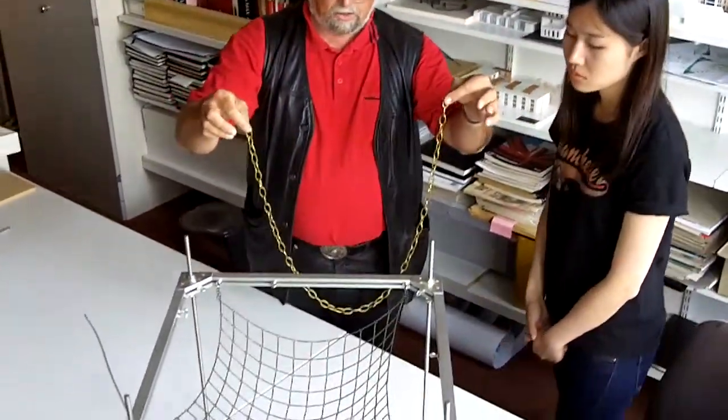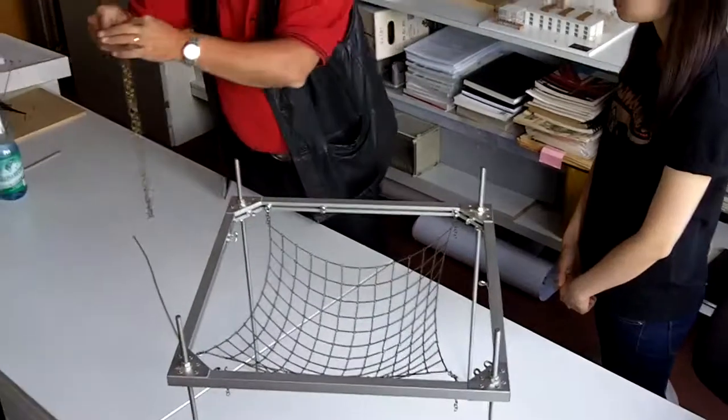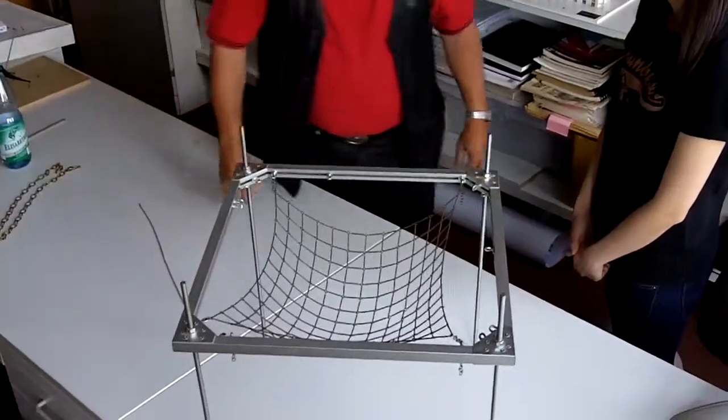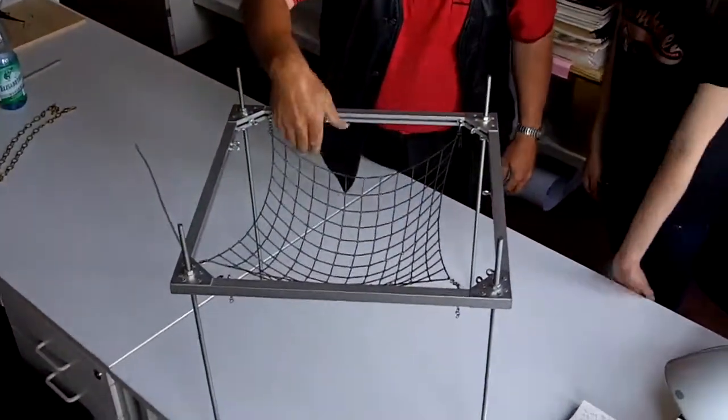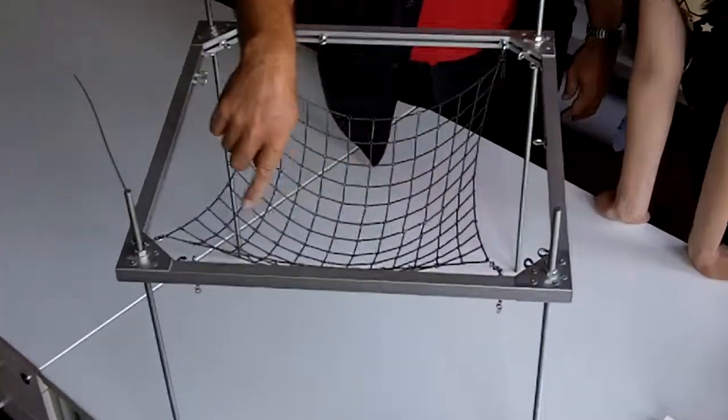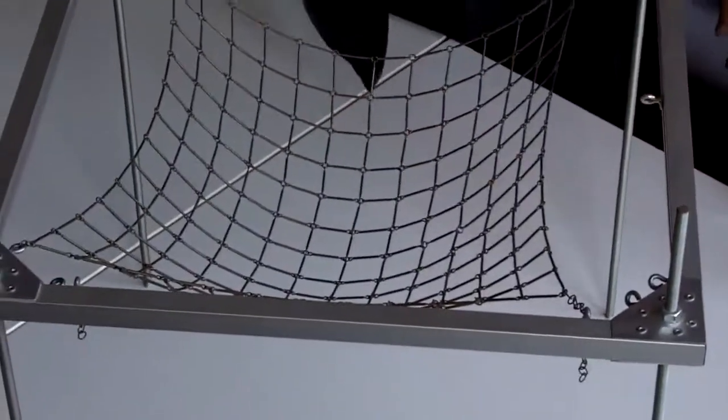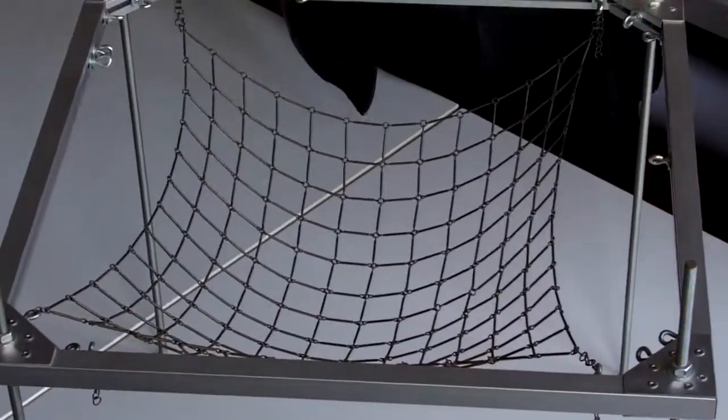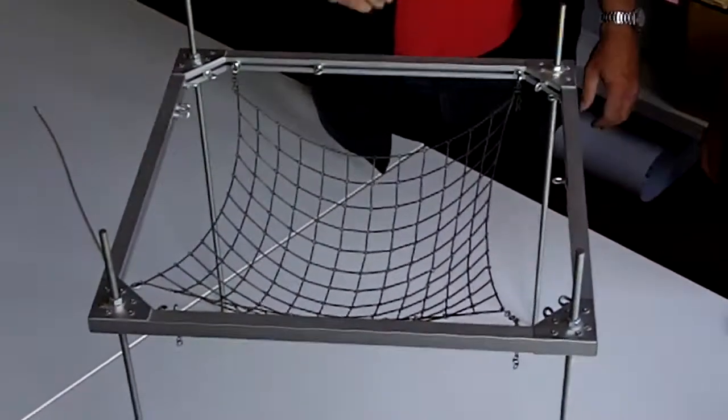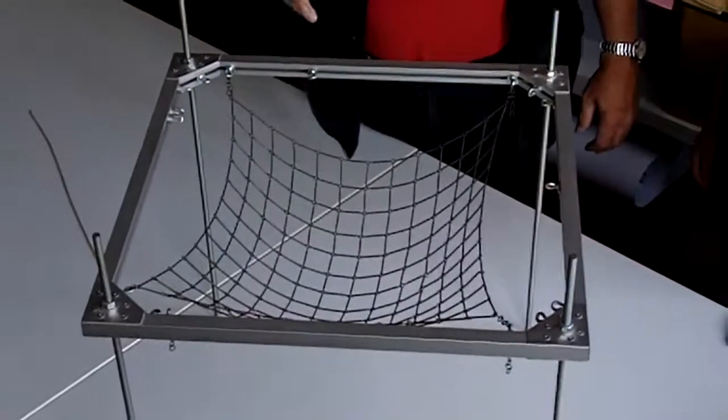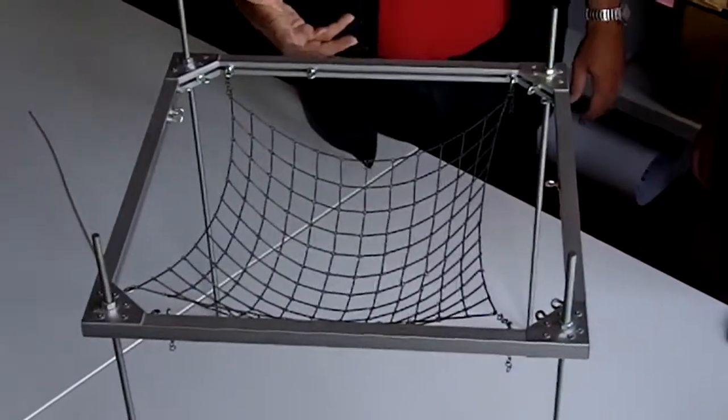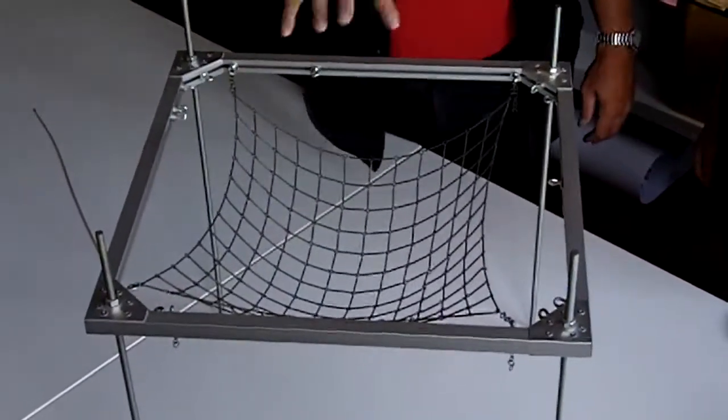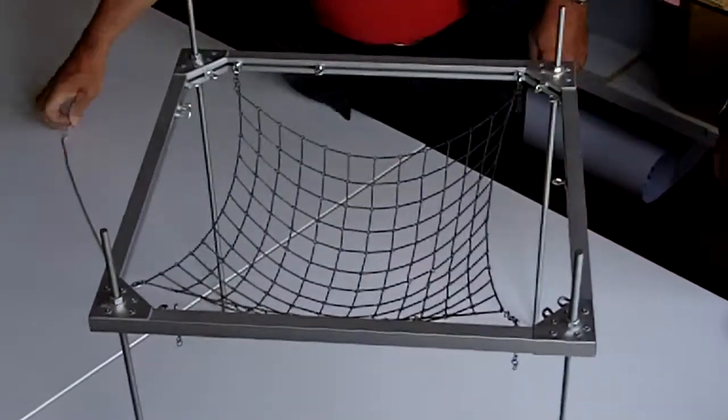The next step is that I don't take a single chain. I have here now many chains connected to a net, and you see here a hanging shell. We call this grid shell because it's similar to a grid.